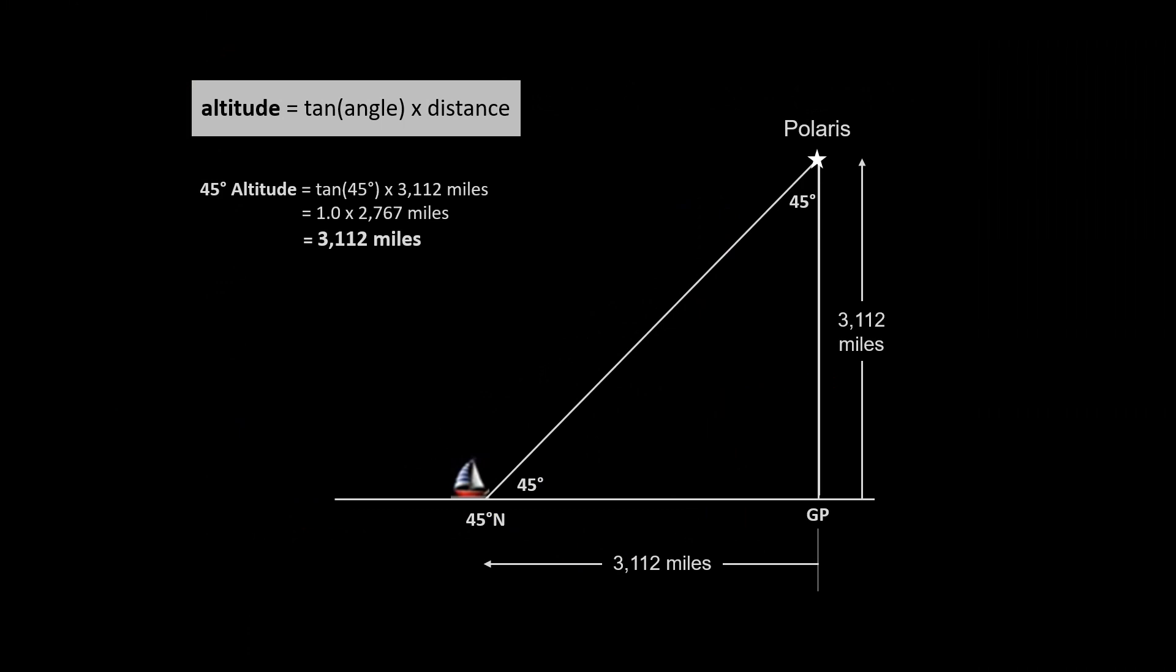Of course, if we use the 45th latitude for Polaris, we don't even need to make a calculation. We know that the 45th latitude is about 3,112 miles from the North Pole.